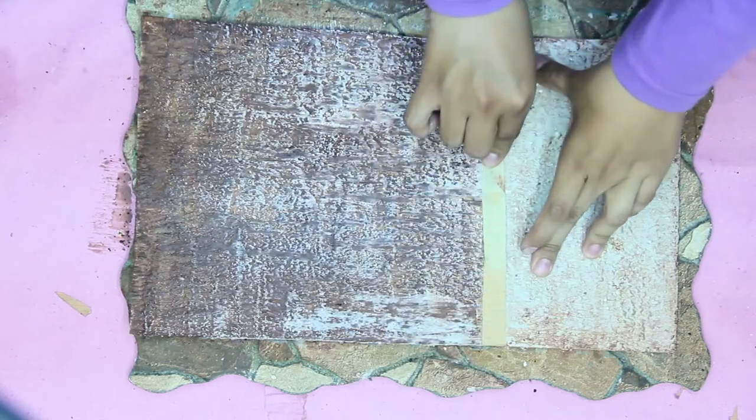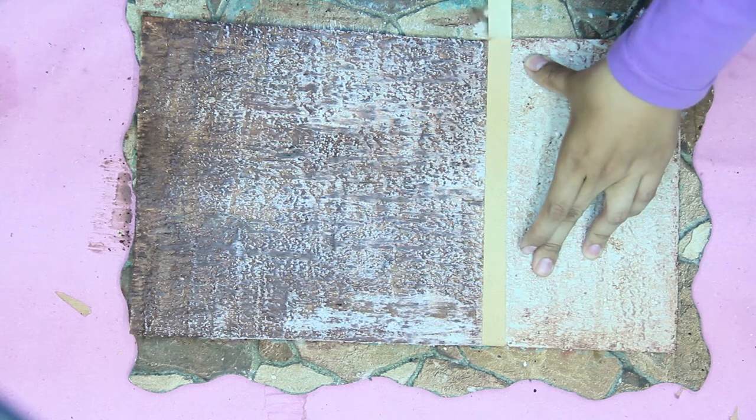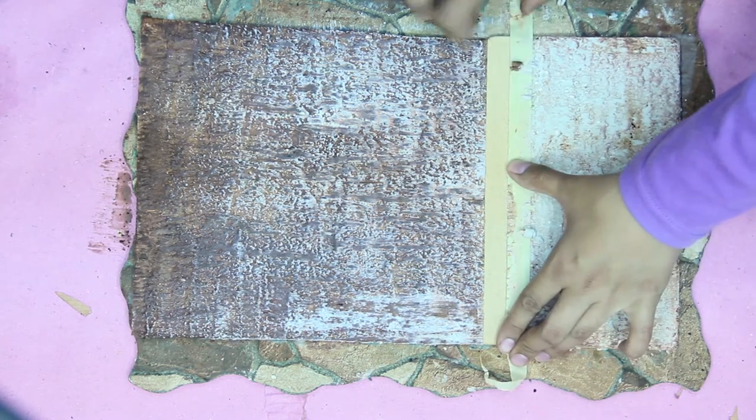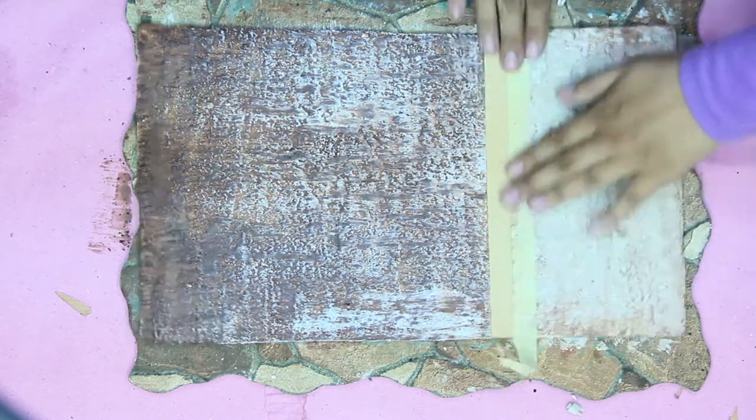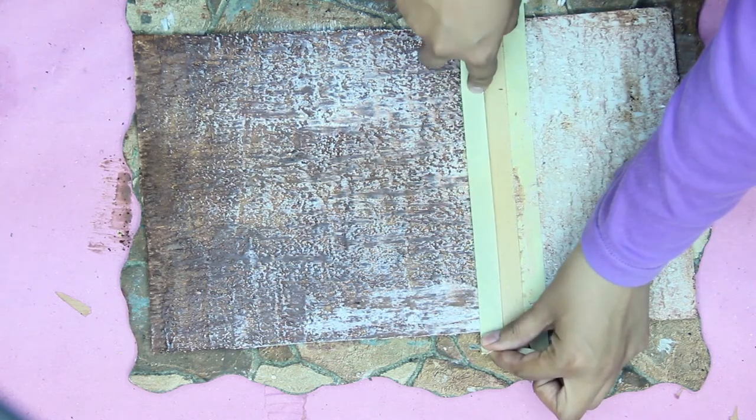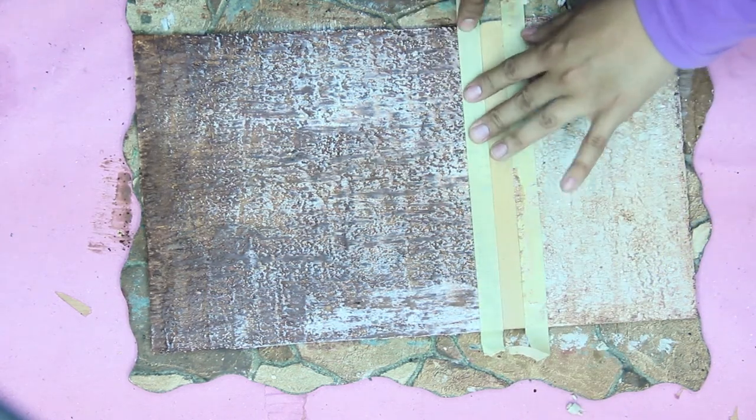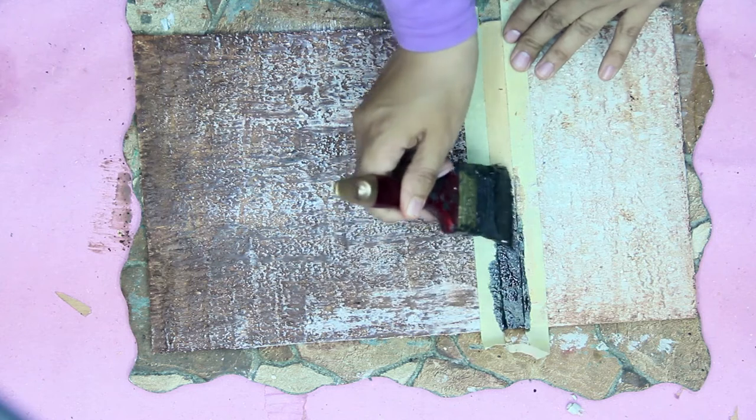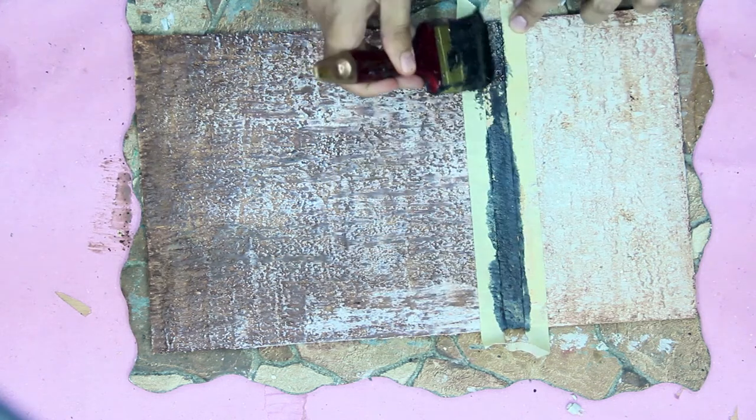I will remove the tape and put it over the colored space. I will paint with black wax the empty area.